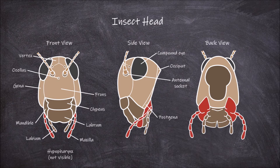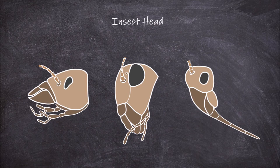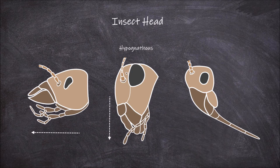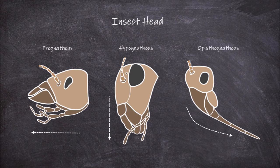There are three types of head in insects based on the orientation of the head and mouth parts. The first is called hypognathous, where the mouth parts are pointed ventrally, which is downwards. When the mouth parts are pointed anteriorly, which is forwards, the head type is known as prognathous. The third, opisthognathous, is where the mouth parts are pointed posteriorly.